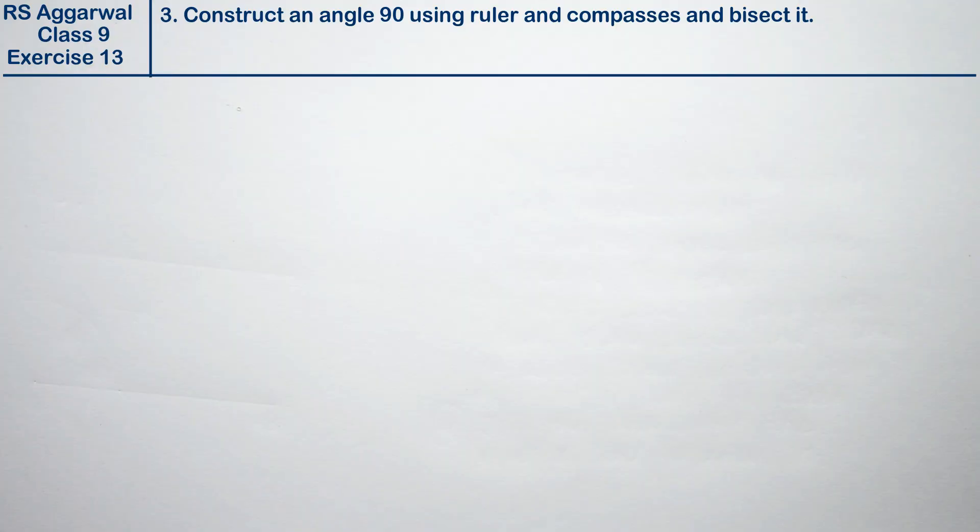Let's do question number 3 of exercise 13, that is geometrical construction. Question number 3 is construct an angle of 90 degrees using ruler and compass and bisect it.